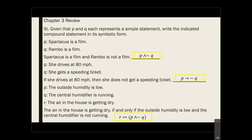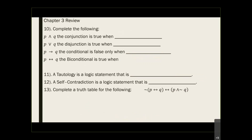Number 10 is just to remind you when does a compound statement become true or false. If you remember, the AND statement — when does this AND statement become false or true? The conjunction is true only when both P and Q are true.